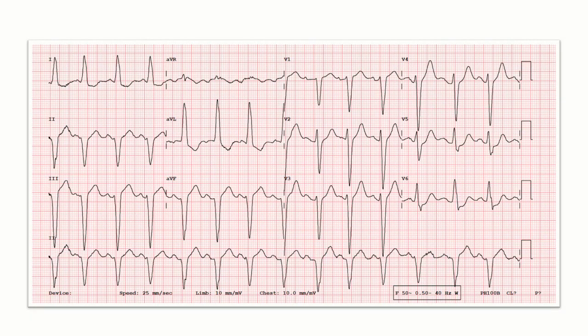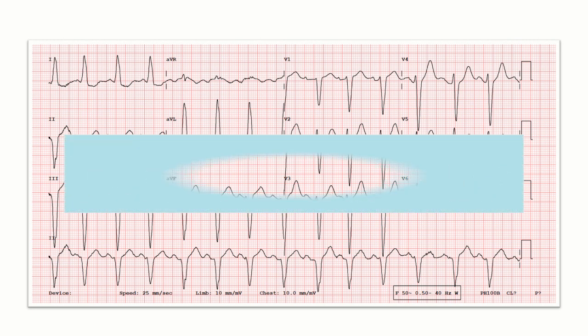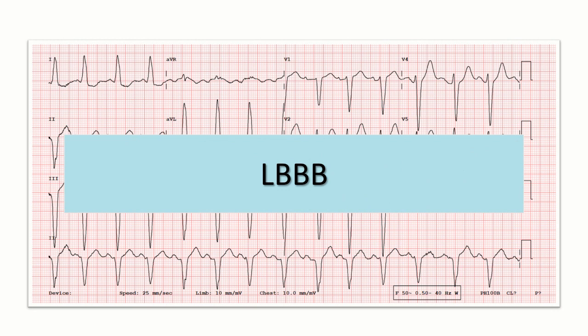After fulfilling all the criteria of left bundle branch block, we can now confidently say that this patient has left bundle branch block in his ECG. I would like to add one more point: if an ECG fulfills all the criteria of left bundle branch block except that QRS duration is less than 120 milliseconds, then it is called incomplete left bundle branch block.